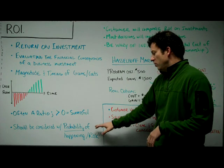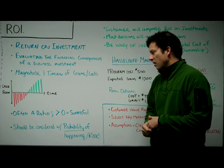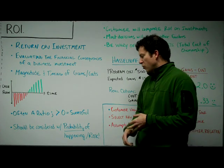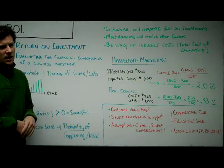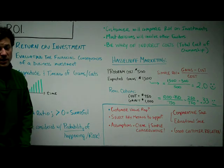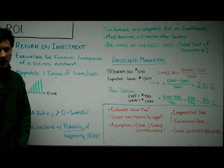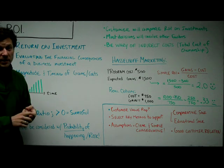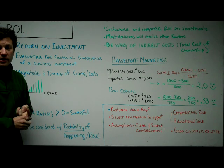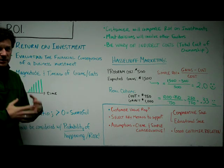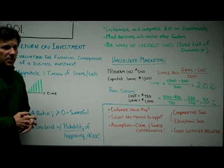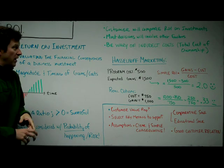Also, be really careful around ROI. It's easy to talk about it and make projections, but the probability of having it happen and the risk associated with actually achieving those numbers is really where push comes to shove. Salespeople can come in and claim some ROI equation, and if you can't prove it at all, that's one problem. And if it ends up being a lot lower than expected, that's another problem. So make sure to factor in risks and probabilities — that's a soft decision. There's no right answer, but it's an important thing to keep in mind when evaluating ROI.